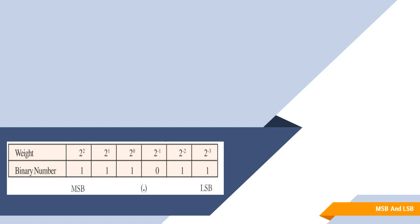A computer is a machine. It has two states: off and on. The off state is represented by 0 and the on state is represented by 1.